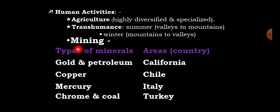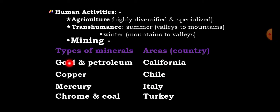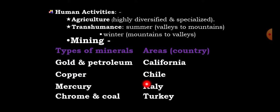Another economic activity is mining. Types of minerals and their areas include gold and petroleum in California, copper in Chile, mercury extraction in Italy, and chrome and coal in Turkey.